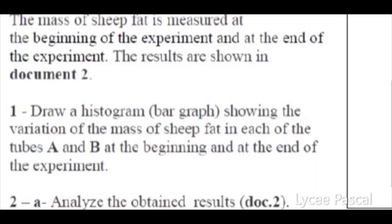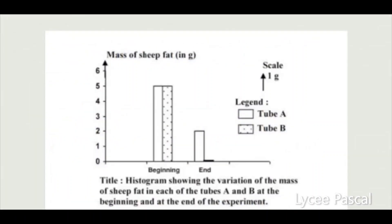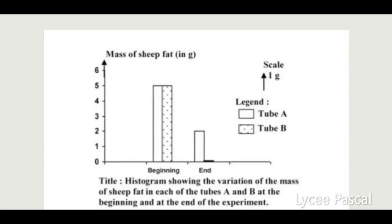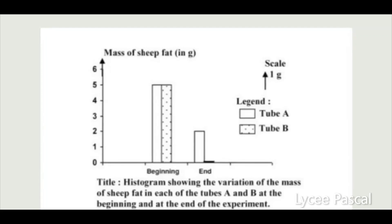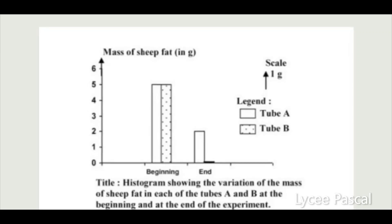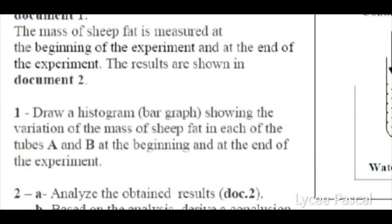The first question asks us to draw a histogram showing the variation of the mass of sheep fat in each of the tubes A and B, at the beginning and at the end of the experiment. To draw the histogram, we write the scale on the Y-axis — the mass of sheep fat in grams. On the X-axis, we write 'beginning' and 'end of the experiment.' We add legends to differentiate between tube A and tube B, then we write a title.